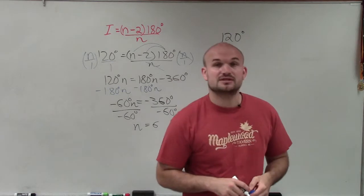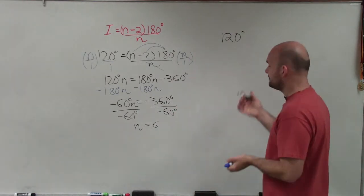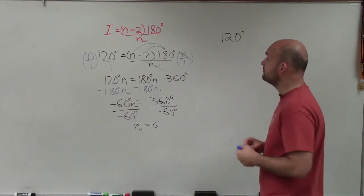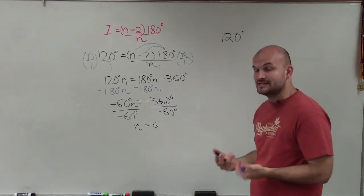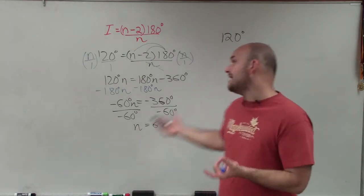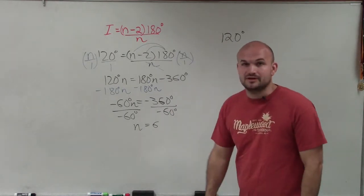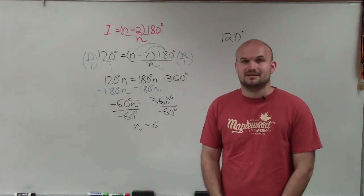So n equals 6 equals the number of sides. Therefore, when I have the measure of interior angles of a regular polygon is 120 degrees each for every angle, I have a six-sided figure, which is a hexagon. Thanks.